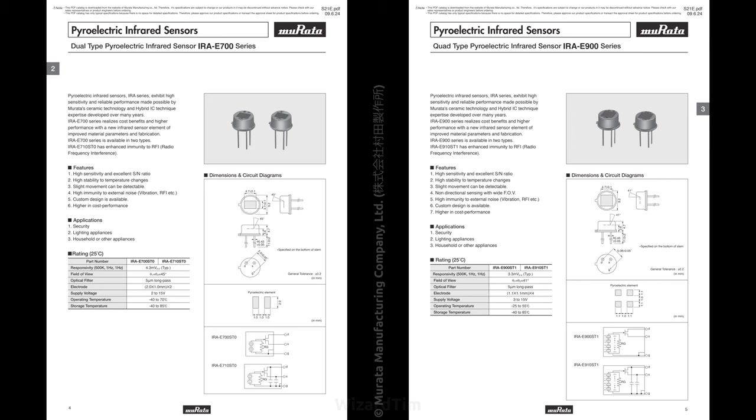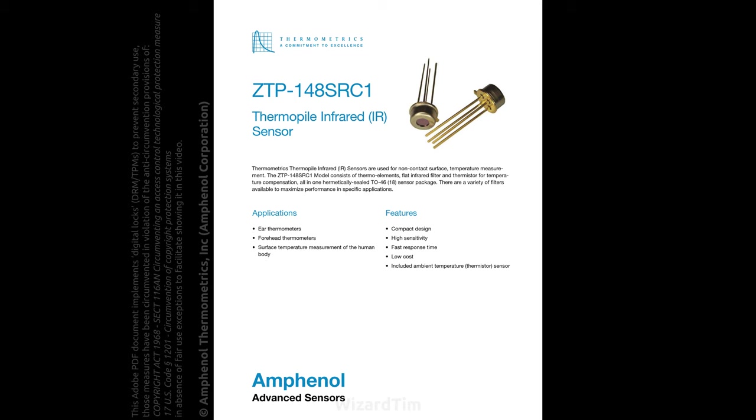I'll also mention that there are actually different types of pyroelectric infrared sensors that can detect more different types of movements, like this quad-type pyroelectric sensor that has four of these elements. And that can detect people moving across the field of view, both sideways as well as up to down. So there are certain applications where you'd want to use this for instance, on a ceiling.